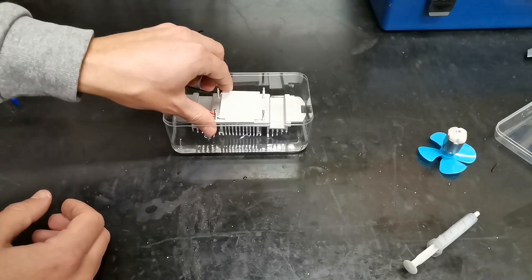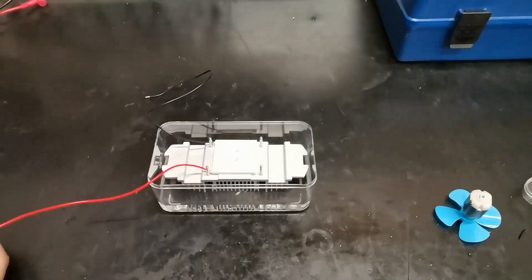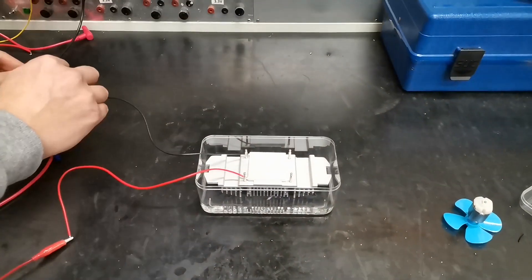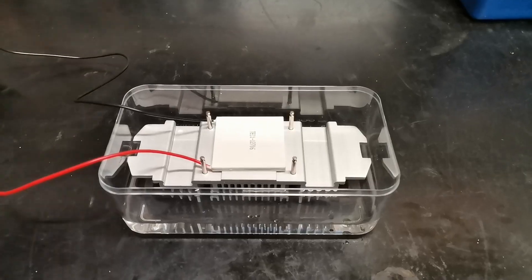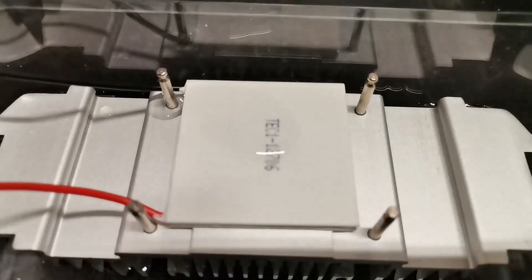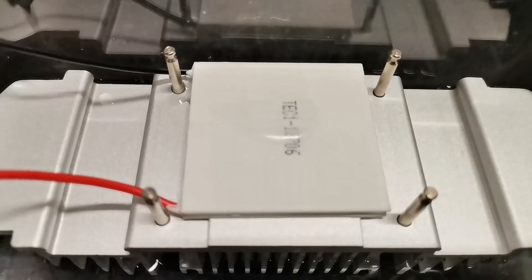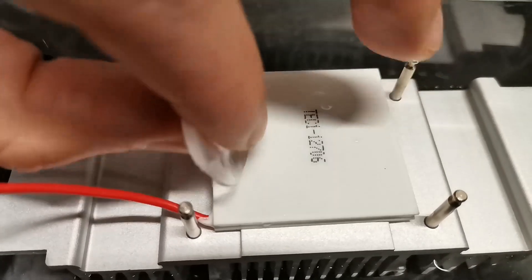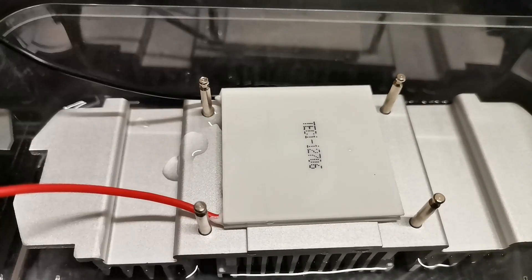But first, let me explain briefly how it works. Thermoelectric coolers basically work by moving heat from one side to the other when electricity is applied. This means that one side of the plate is going to be very hot, while the other plate gets very cold. It can reach temperatures low enough to freeze water.